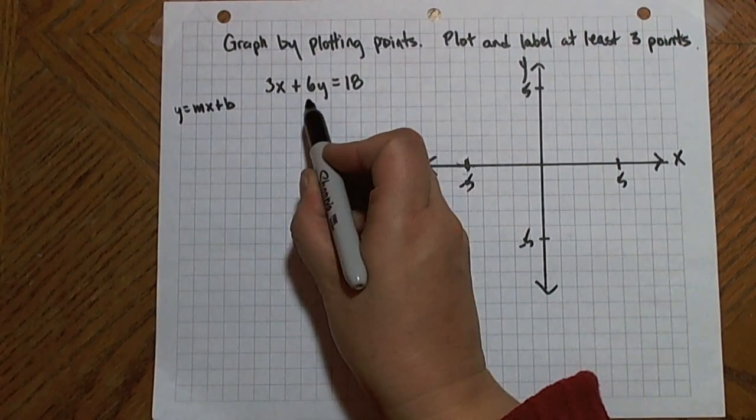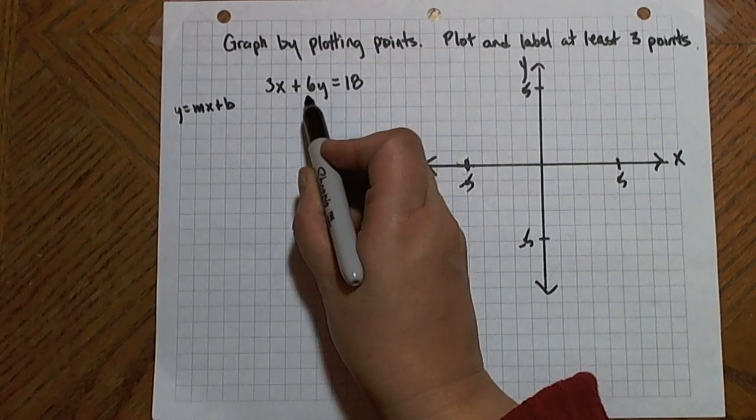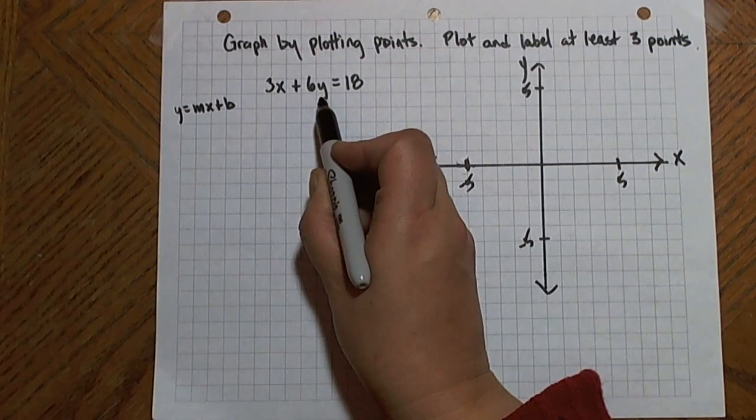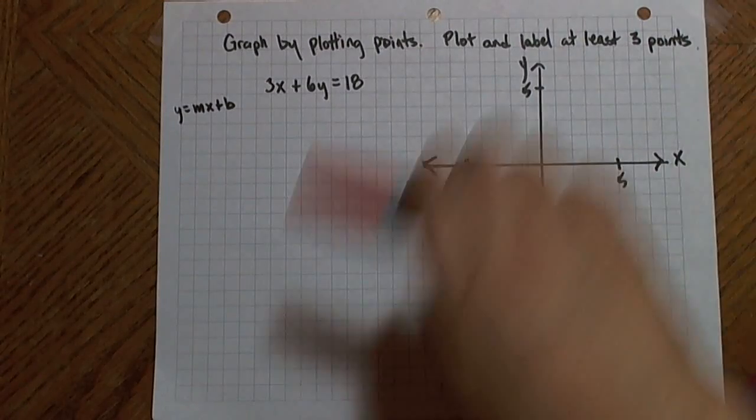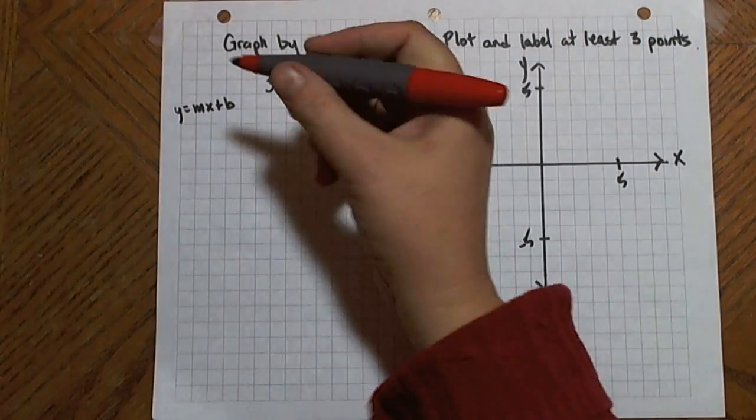So I'm going to solve this equation for y. I want to isolate the term that includes y. To get 6y by itself, I'd have to get rid of the other term, the 3x term. So I could do that by subtracting 3x from both sides.